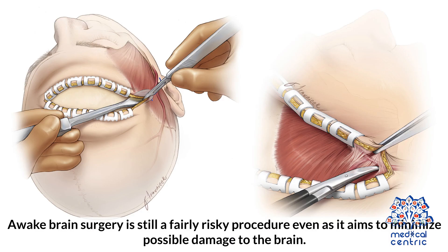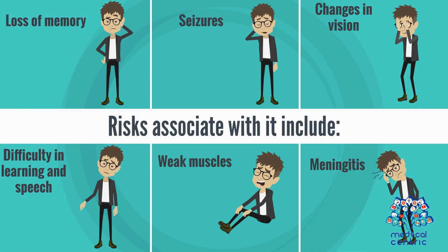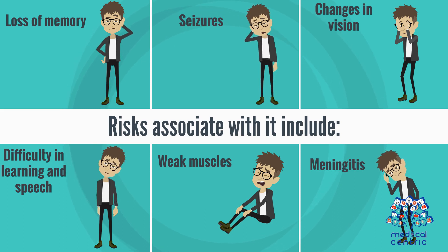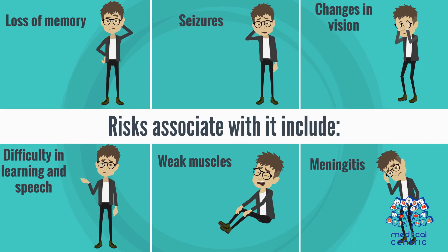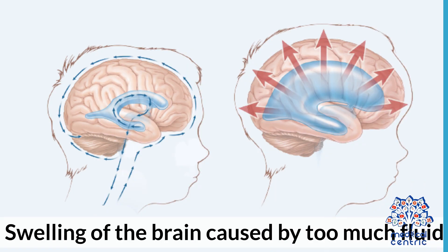Awake brain surgery is still a fairly risky procedure, even as it aims to minimize possible damage to the brain. Risks associated with it include: loss of memory, seizures, changes in vision, difficulty in learning and speech, weak muscles, meningitis, loss of spinal fluid, stroke, impaired balance, loss of coordination, and swelling of the brain caused by too much fluid.